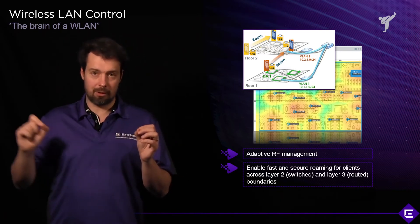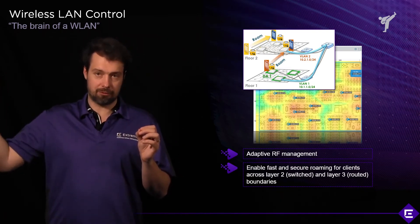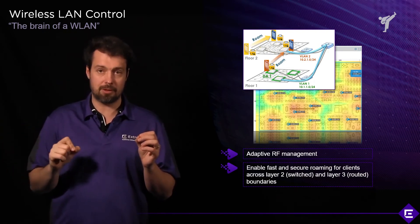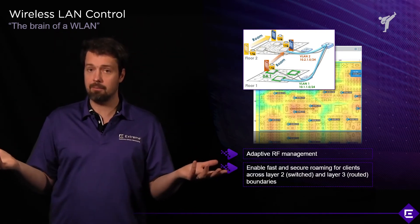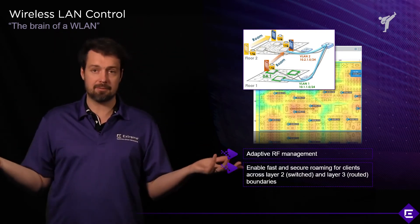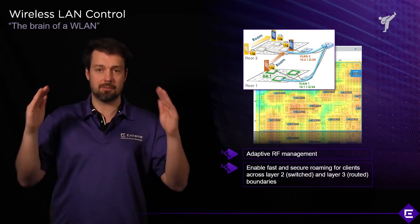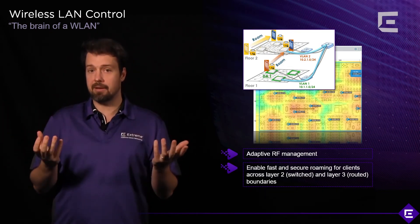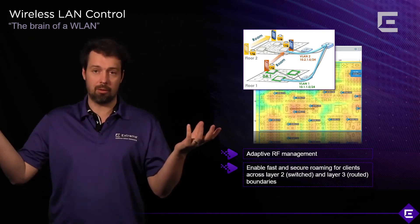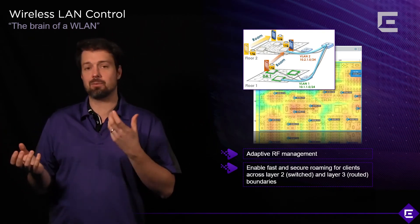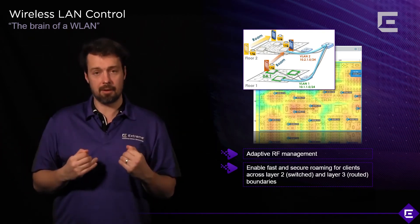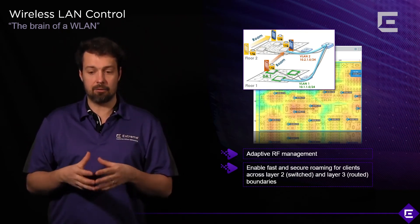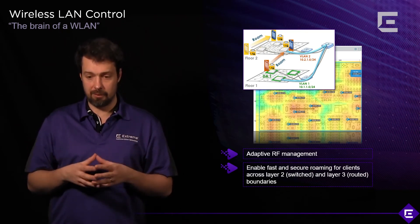If you traverse between two different layer 3 boundaries, or if there's a router between the APs you roam between, you need a solution that will keep TCP/IP sessions up and running even when you roam to a different subnet without changing your IP address. In a controller-based scenario, this is fairly trivial because the data plane is terminated in the same controller. When you roam between two controllers, tunneling is used — and the same applies to distributed control.